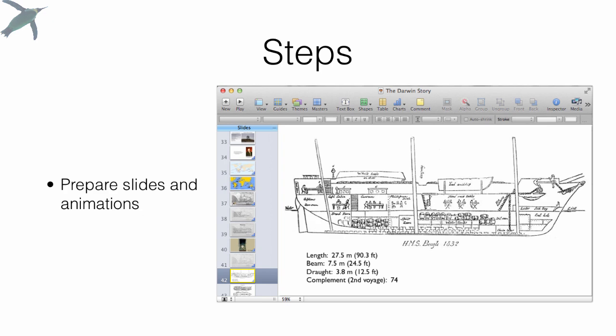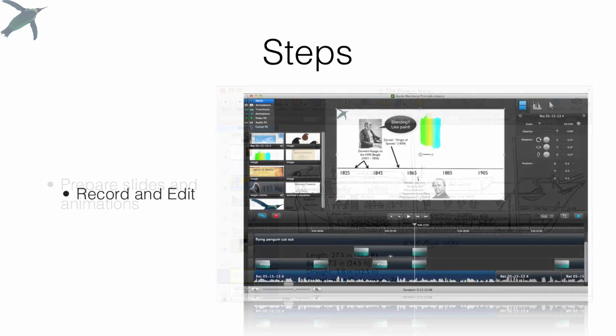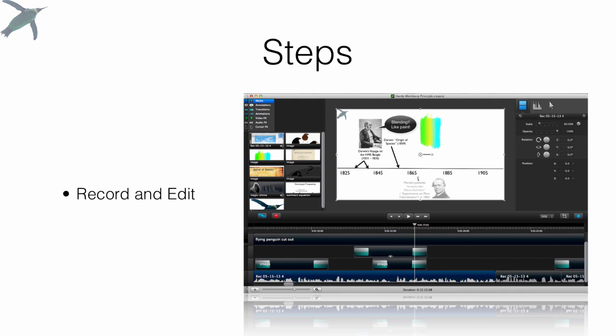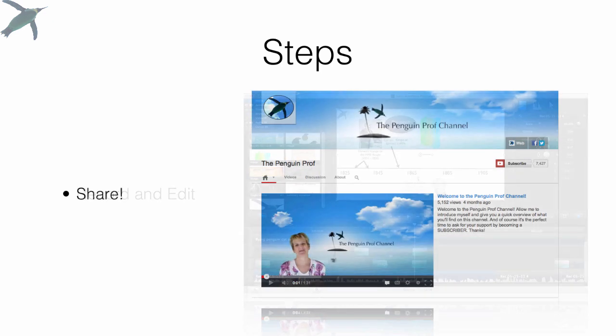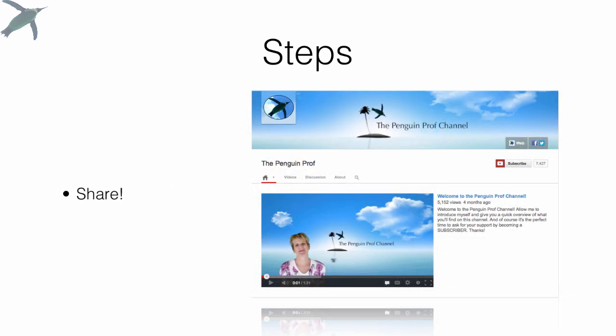So basically the steps you take are pretty straightforward: you prepare your slides and all your animations, then you record and edit in Camtasia, ScreenFlow, or your recorder of choice, and then you upload. To upload to YouTube, you'll need to get a YouTube account, follow the instructions — it's pretty straightforward — and then you're live.